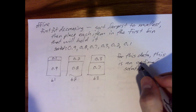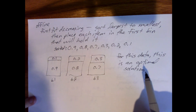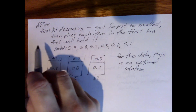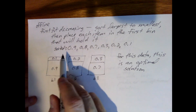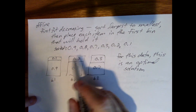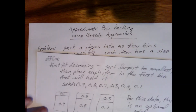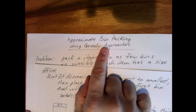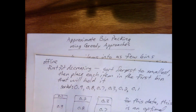None of the algorithms shown are guaranteed to produce an optimal solution. But the last two, for this particular data, did find optimal solutions. Those are examples of approximate bin packing algorithms using greedy approaches to making decisions.